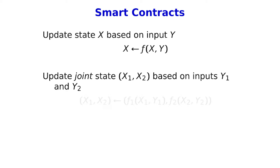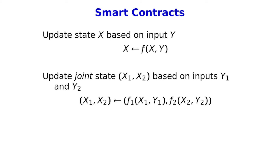The state X might consist of several components. We might have two components, X1 and X2, and then two inputs Y1 and Y2, and then one execution of the smart contract would simultaneously validate some relationship between Y1 and Y2, and then update X1 and X2. For example, in one step — one execution of the contract — you might add one to X1 and subtract one from X2. I want to think about these transformation functions F as being completely general.